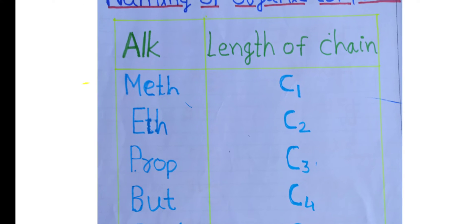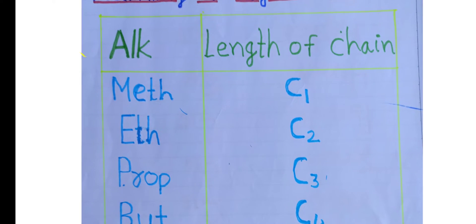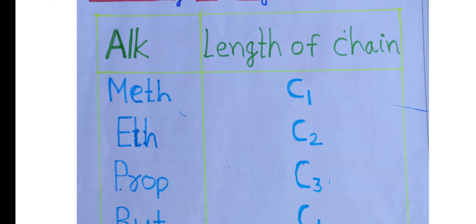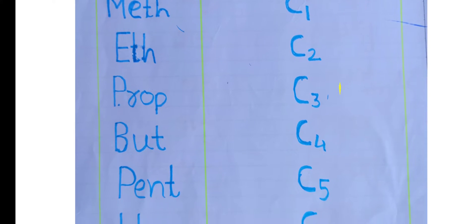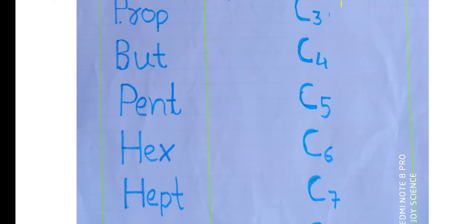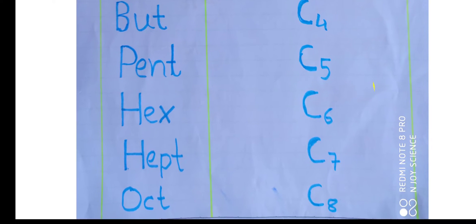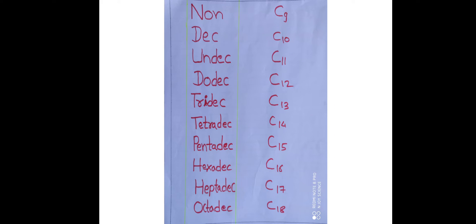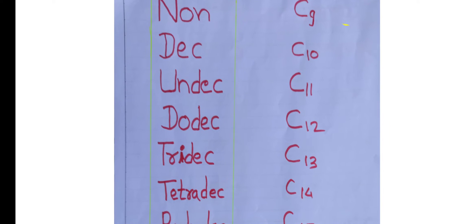Word root depends on the length of the carbon chain. If one carbon, then word root is meth; two carbon, eth; three carbon, prop; four carbon, but; five, pent; six, hex; seven, hept; eight, oct; nine, non; ten, dec.